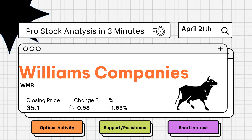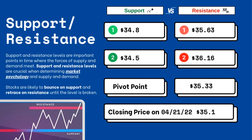Pro stock analysis under three minutes — we're going to be covering support and resistance levels, options activity, and short interest on your favorite stocks. Let's get right to it. Support and resistance levels are very important because they let you know where supply and demand are meeting.